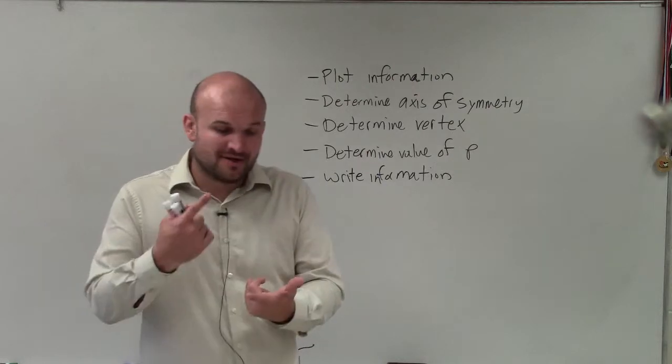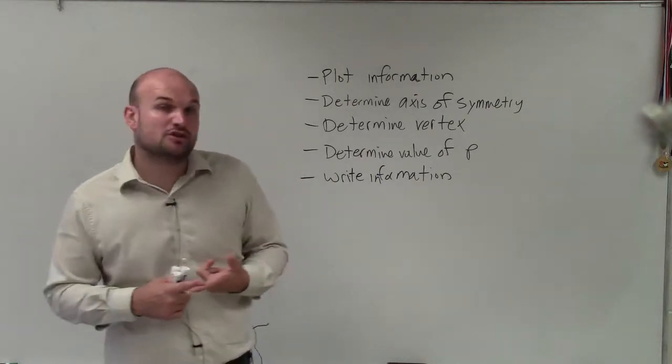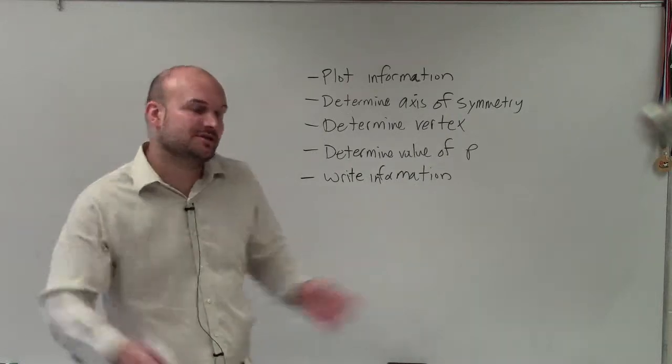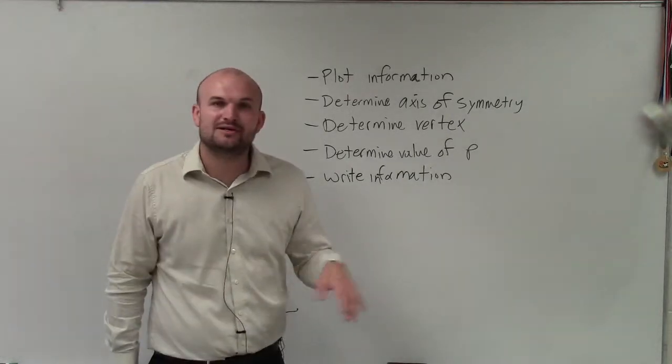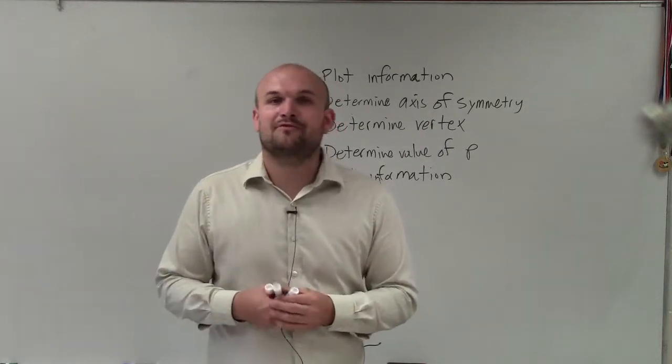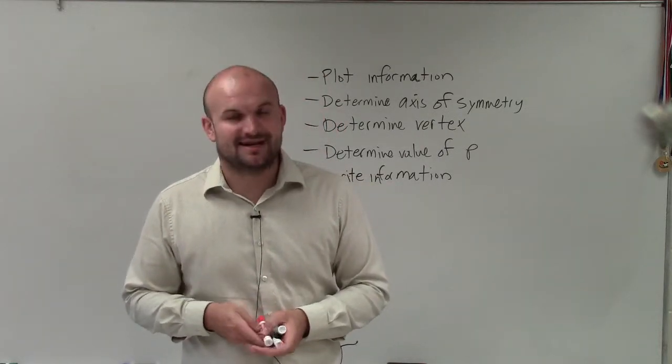The last thing is once you've figured out the axis of symmetry, so you know what equation you're going to use, you know your vertex and you know p, that's all the information you need. Now you can just go ahead and write the equation. So there you go, ladies and gentlemen. That is your step-by-step formula for writing the equation of a parabola in conic sections. Thanks.